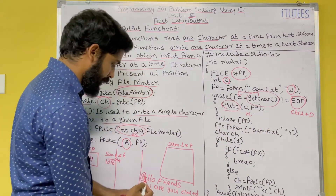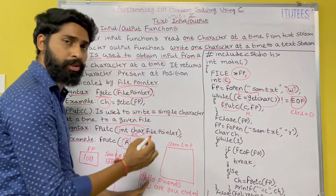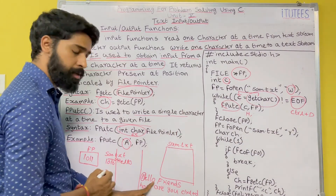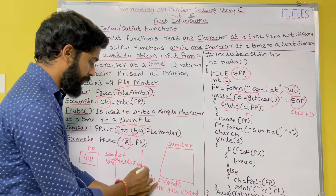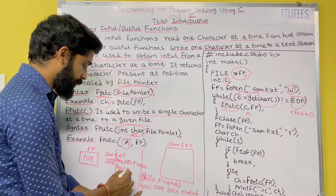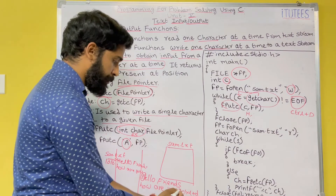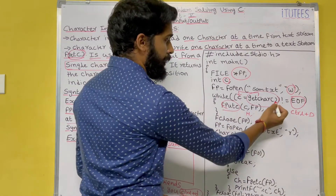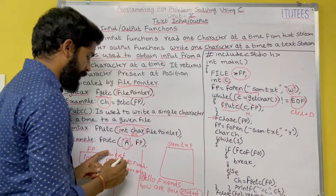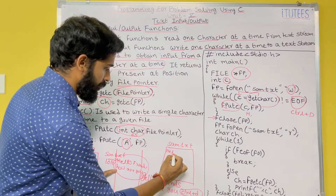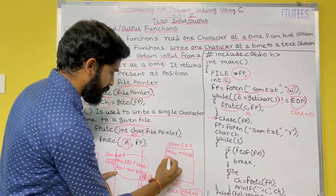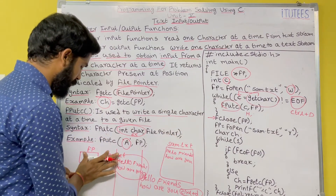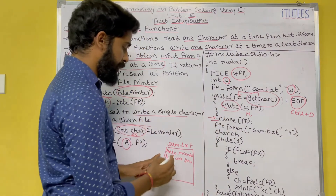Next 'e' is not EOF, so 'e' is written. Similarly 'l' is not EOF so 'l' is written, then another 'l', then 'o', then space, then 'friends', and all the data is stored character by character. After 'u' you press Ctrl+D, which indicates end of file. EOF == EOF, so the condition is now false. Then fclose(fp) is called — the data 'Hello friends. How are you?' is stored on the hard disk and the file pointer is deleted.